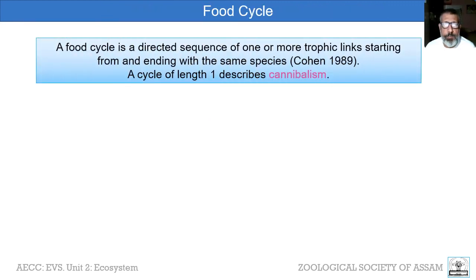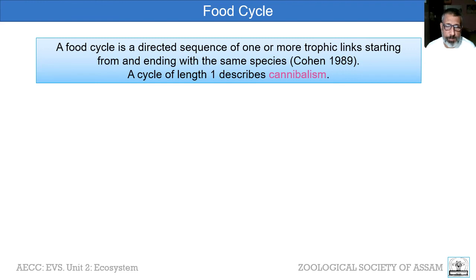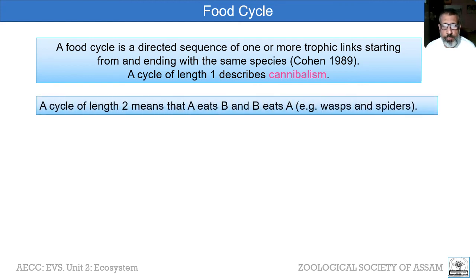A food cycle is a directed sequence of one or more trophic links starting and ending with the same species. A cycle of length one is known as cannibalism, which is quite common in the animal kingdom — for example, sexual cannibalism in the praying mantis, where the female kills and devours the male after mating; the same occurs in many spiders and scorpions. A cycle of length two means A eats B and B eats A — for example, wasps and spiders.